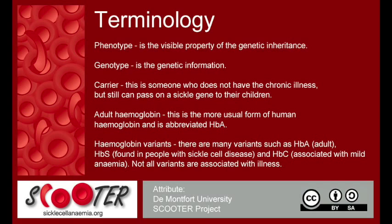Haemoglobin S, HbS, is found in people with sickle cell disease. Another variant we'll look at in this resource is HbC, which is associated with mild anemia. Not all the variants are associated with illness.